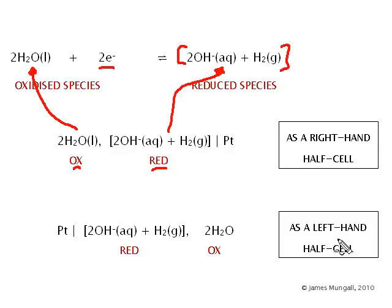If we're going to do the left hand half cell, then we're going to want the relatively reduced species first. So that's exactly the same as that one. And then the relatively oxidized species afterwards.